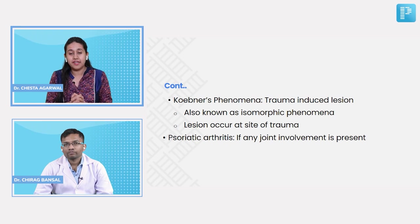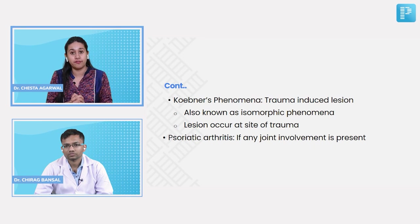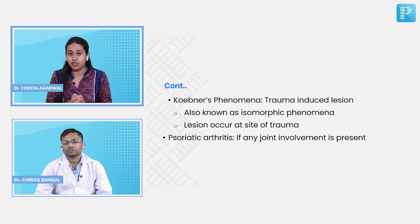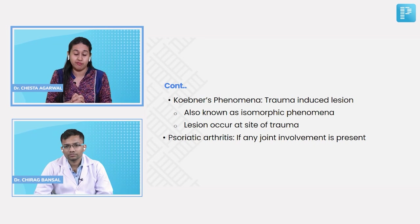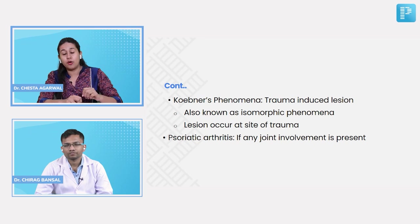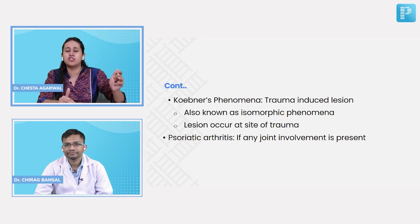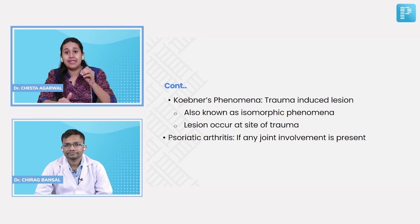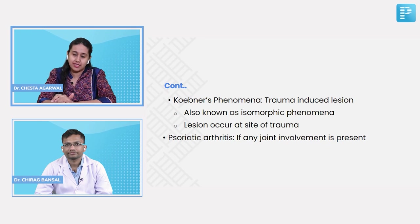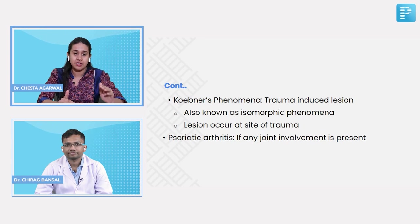Koebner's phenomenon, also known as isomorphic phenomenon, is seen in psoriasis, lichen planus, and vitiligo. Whenever there is trauma to the skin, at the site of trauma, those specific lesions tend to develop. So if a patient is a known case of psoriasis or lichen planus, they tend to develop those lesions at traumatized sites.